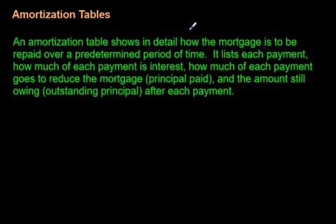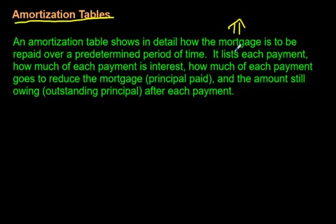Today we're going to look at something called an amortization table. It's a big word, but it just means it's a table. It shows in detail how a mortgage is to be repaid over a set amount of time. A mortgage is talking about a house and paying it off. Most of us have to do that because most of us are not rich enough to just go and buy a house — we all have mortgages. An amortization table gives you detailed information.